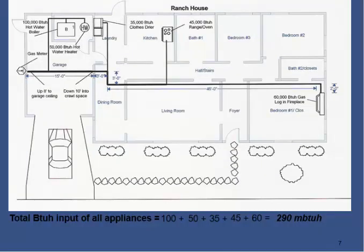This slide is presenting the total BTU in MBH. You can see 100 MBH, 50 MBH, 35 MBH, 45 MBH, and 60 MBH—the total is roughly about 290 MBH. From the previous slide and this slide, we have calculated the longest length of the pipe and the total demand of the system.